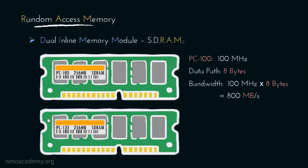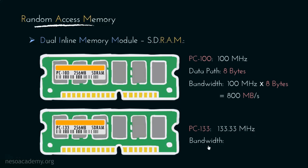Now consider this SDRAM. On the label, PC133 is written, which means this particular RAM operates at a frequency of 133.33 MHz. Can you figure out the bandwidth of this one? Feel free to write down your answers in the comment section. As a hint, the bandwidth will have to be obtained omitting the fraction part.